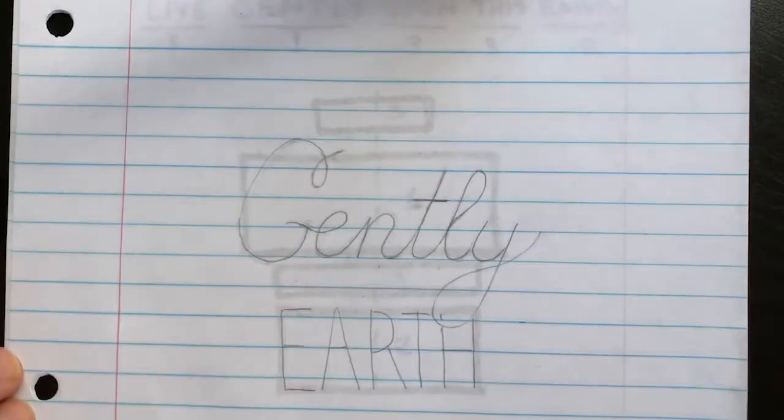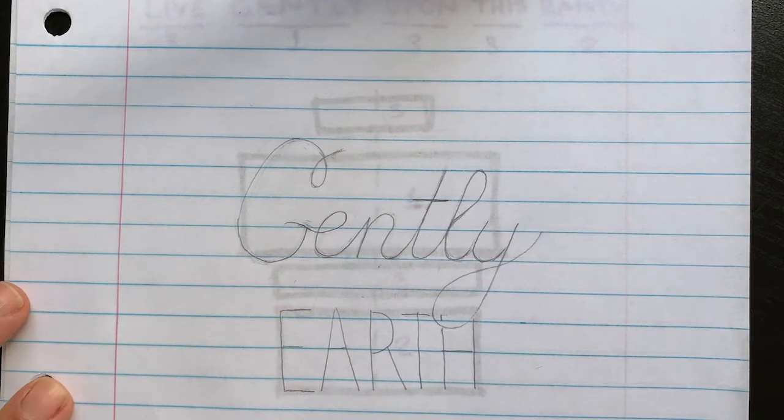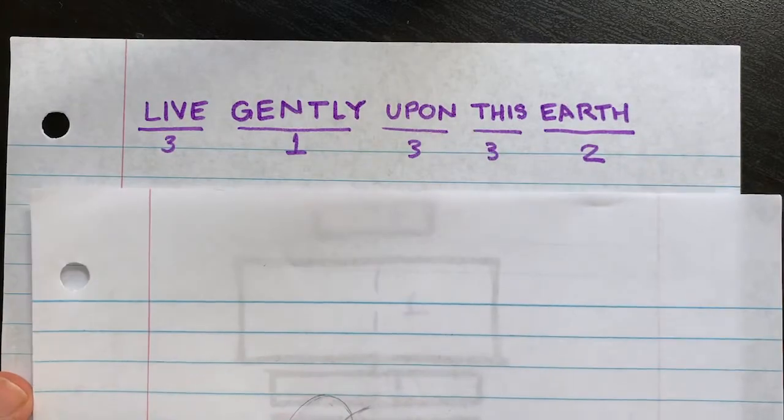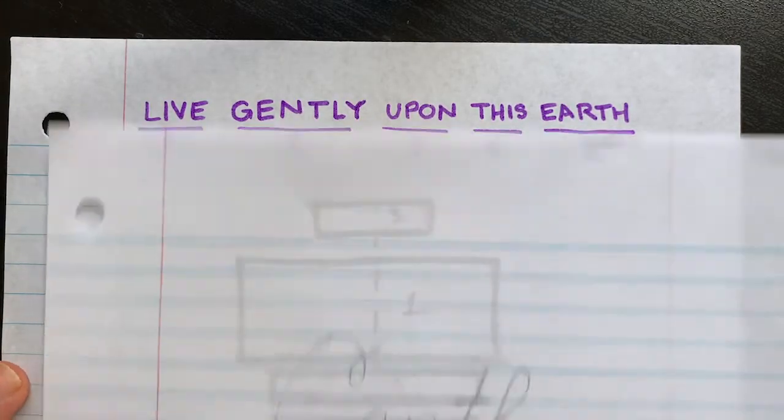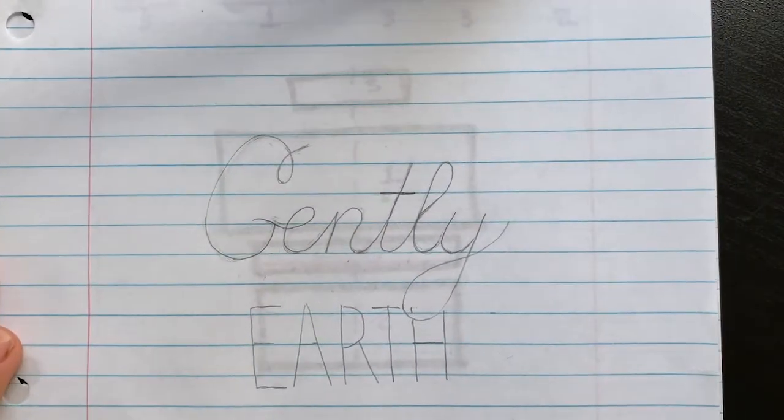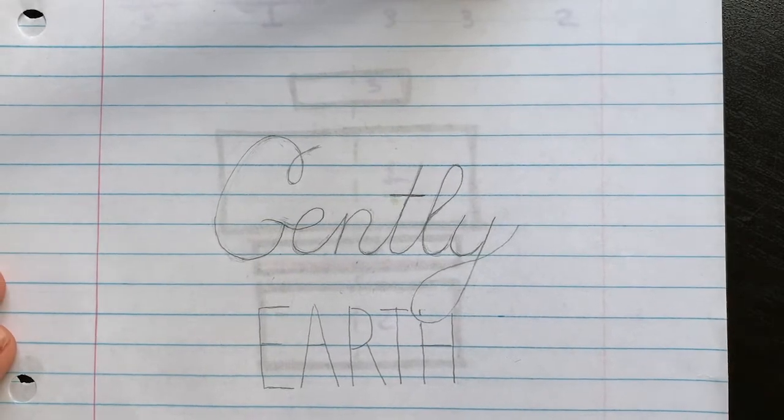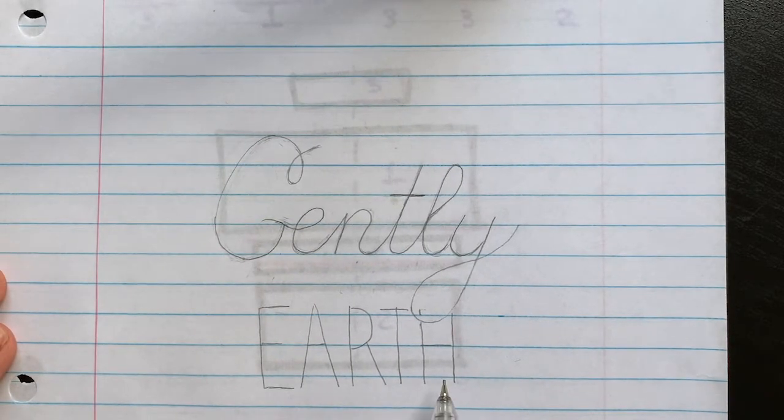Then I draw my next biggest word, which is earth. Remember, go back to my numbers here, so earth is number two. And for earth, I just drew very thin block letter shapes, and that way I know where the letters will be, how big they are, when I trace them over with the marker.